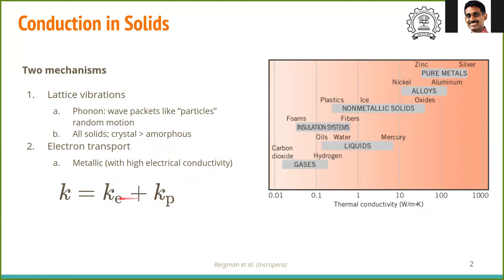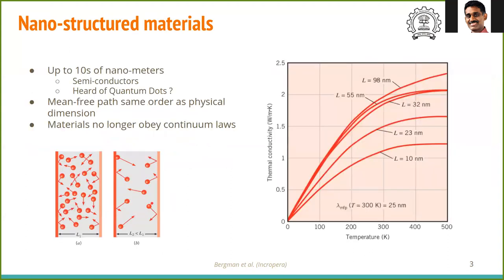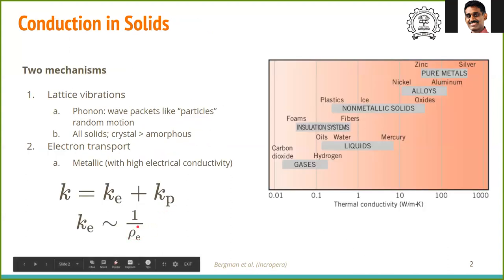The electronic conductivity is related to electrical conductivity. One over electrical resistivity is electrical conductivity, and thermal conductivity is roughly proportional to electrical conductivity.